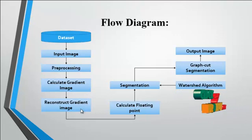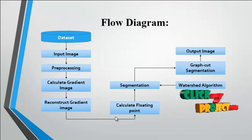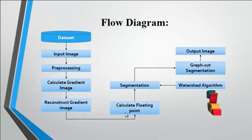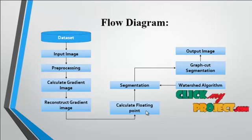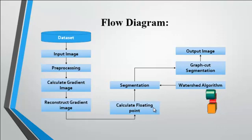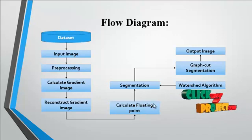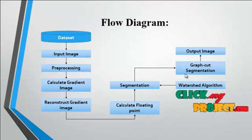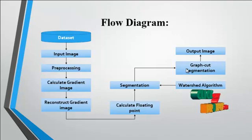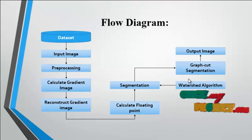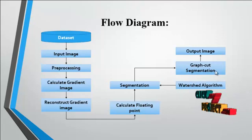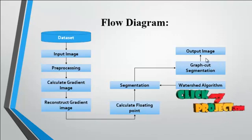After calculating the gradient image, we reconstruct the gradient into a reconstructed form. After reconstruction, the calculation of floating points is done — the floating points present in the image are calculated. After that, segmentation is carried out using two major methods: graph cut segmentation and watershed segmentation. From that segmentation, we obtain the fine segmentation result as output.